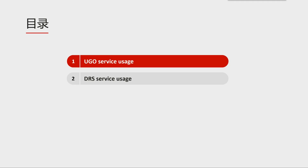This part is the UGO Service Operation Demonstration, which is to help you have a brief understanding of how to use UGO to migrate your database objects and applications. This demonstration has two parts. First, it introduces the end-to-end migration process of the UGO Service. By learning the end-to-end migration process, you can master the migration methodology and clearly understand the purposes and results of each step.